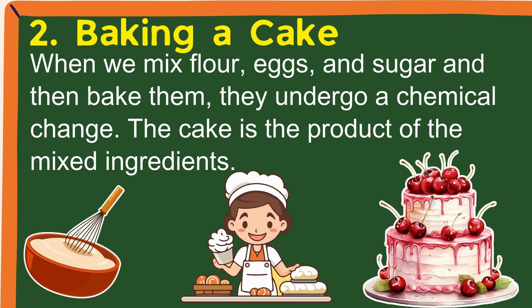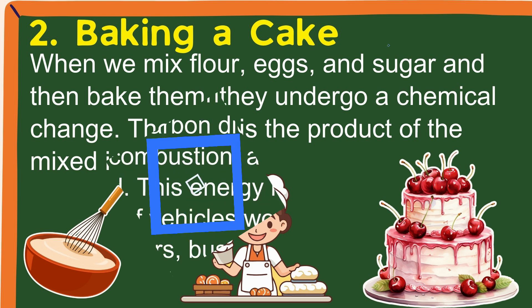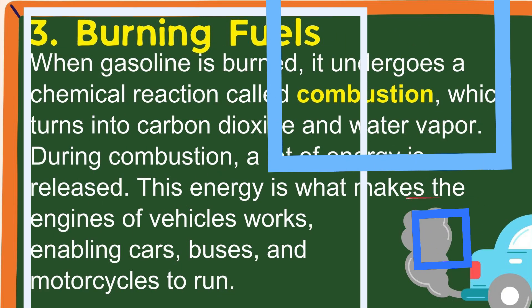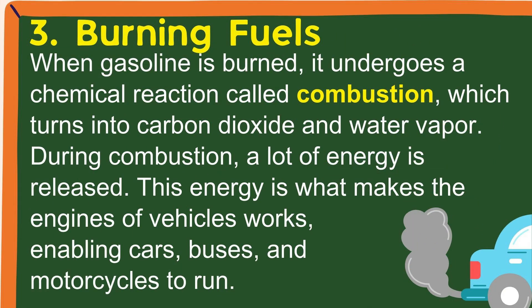2. Baking a cake — when we mix flour, eggs, and sugar and then bake them, they undergo a chemical change. The cake is the product of the mixed ingredients. 3. Burning fuels — when gasoline is burned, it undergoes a chemical reaction called combustion, which turns into carbon dioxide and water vapor.